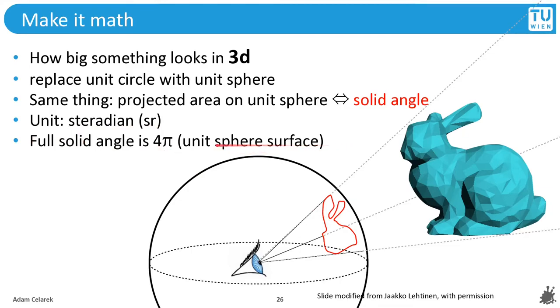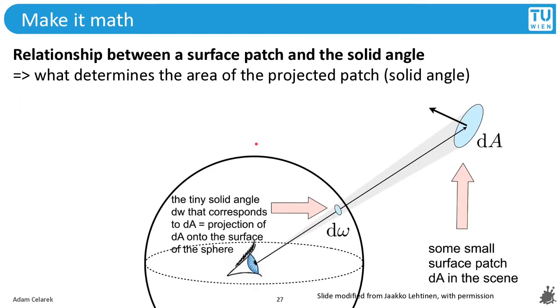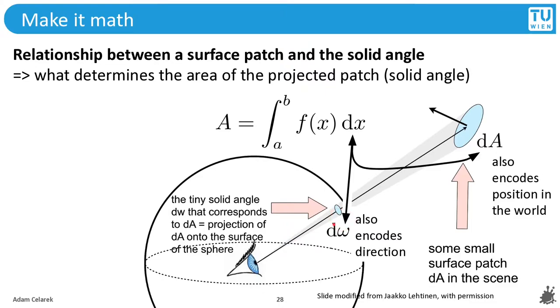Now we want to look at the relationship between a surface patch, again this is a differential right now, and the solid angle, which is the differential on the unit sphere. Those two differentials represent the same thing. We have here a small surface patch, well here we have projected this surface patch onto the unit sphere. The solid angle in here also encodes the direction, while the surface patch also encodes the position in the world. And as we already said, those two are both differentials from an integral.